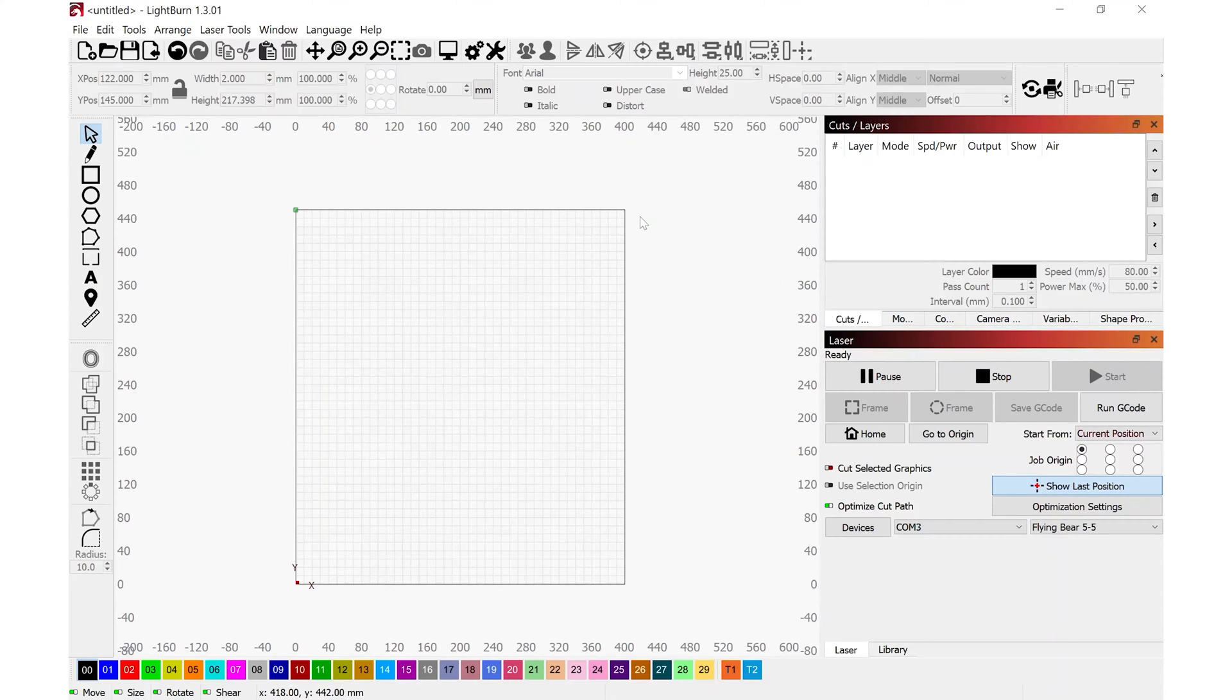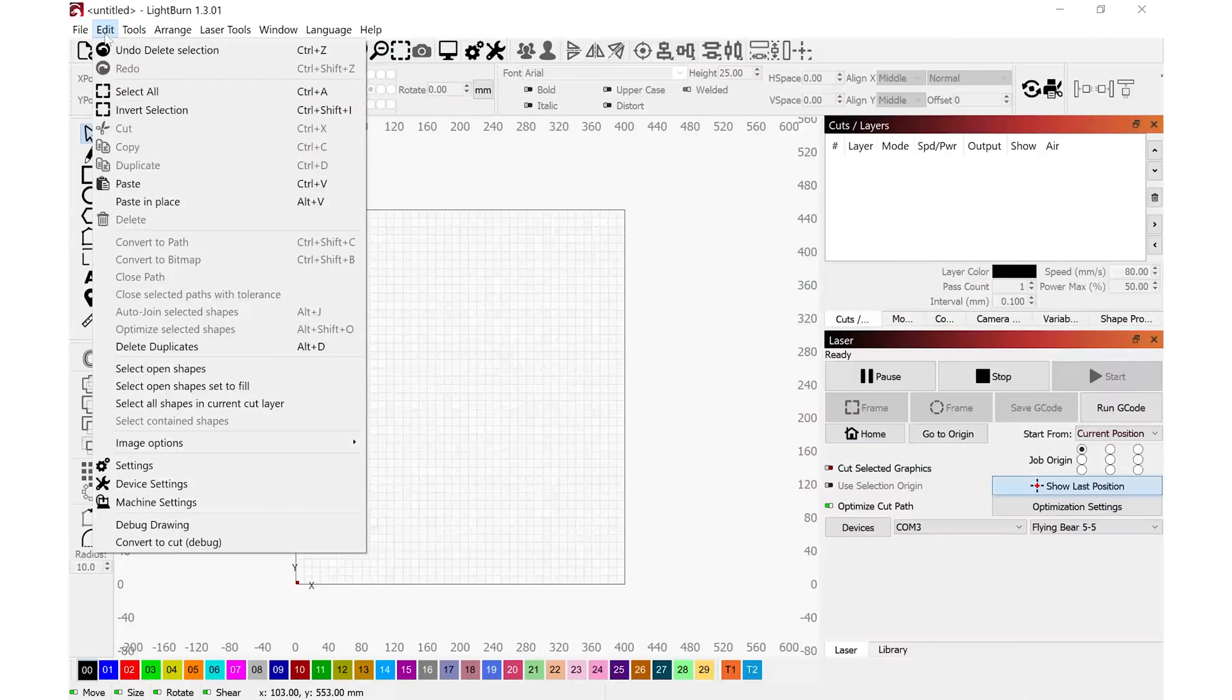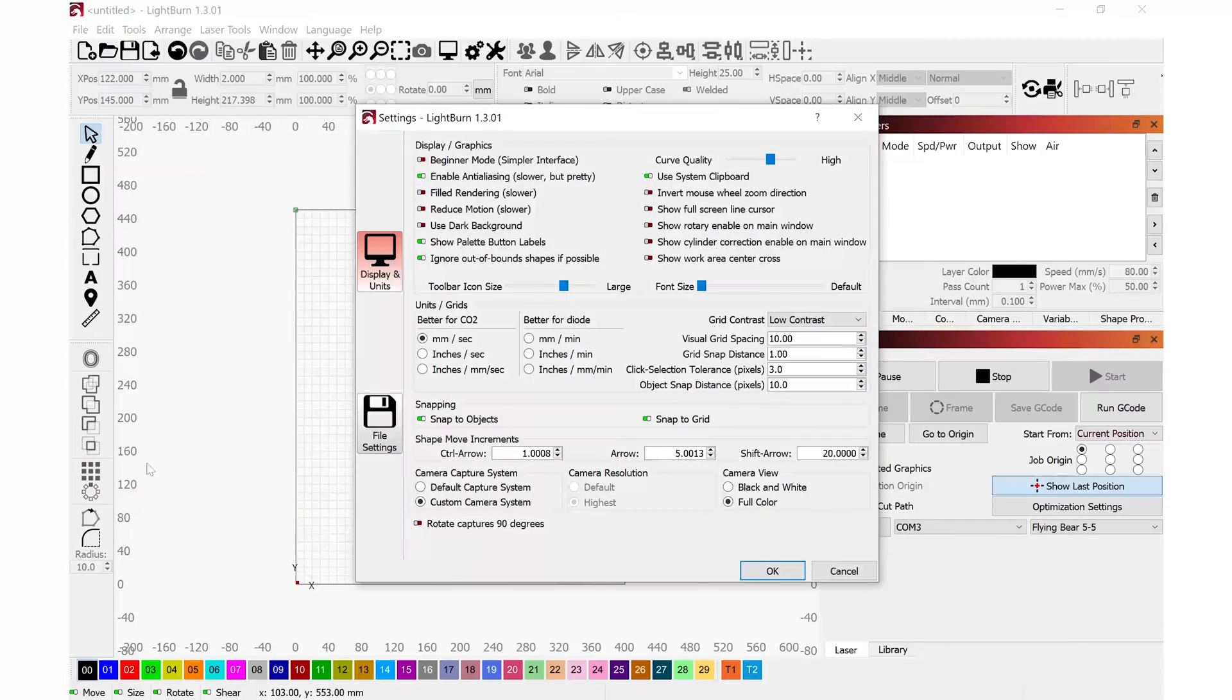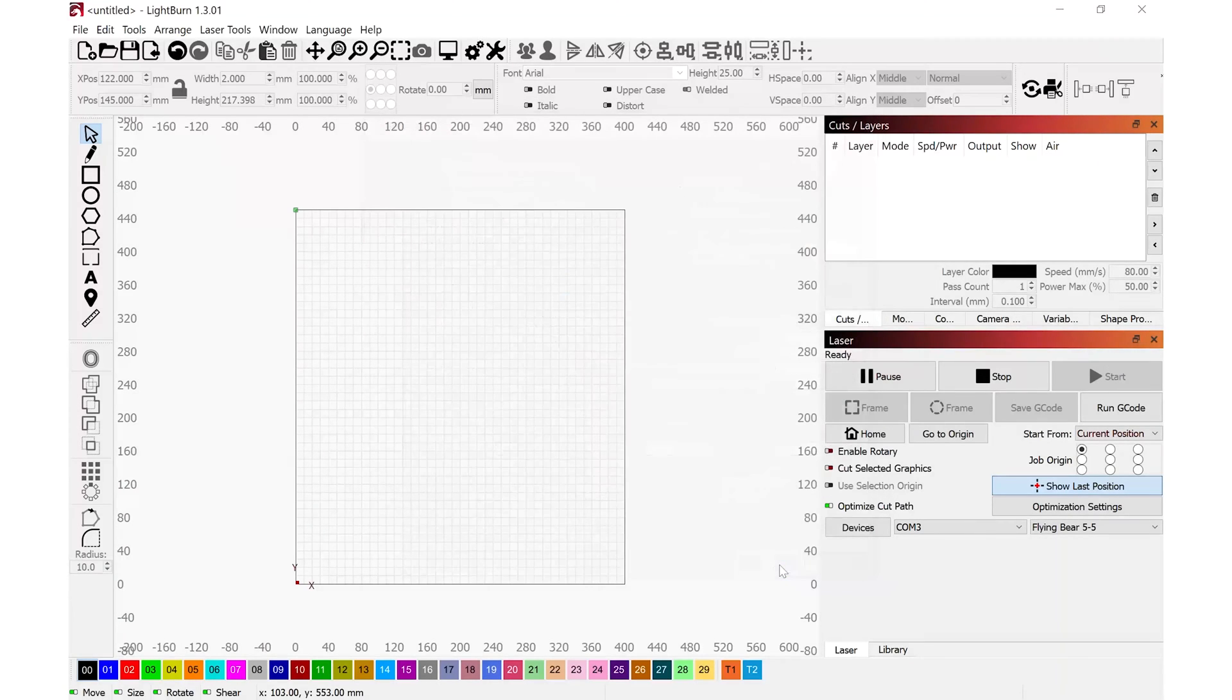Here I'm in Lightburn software and the first thing that I'm going to do is navigate to cuts and layers and we're going to see that down in this bottom area here. I don't have anything for the rotary to enable it or disable it. If you're missing this, go to the top of the screen to edit, settings, and there's a checkbox right here. Show rotary enabled on main menu window. I'll click OK. And now I have this little spot. I'll enable that.